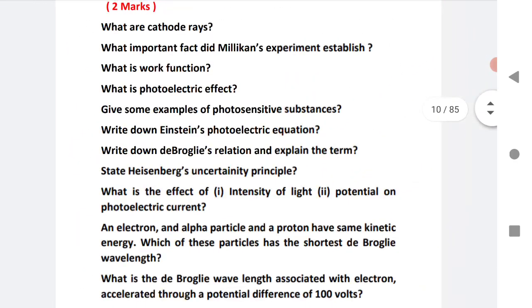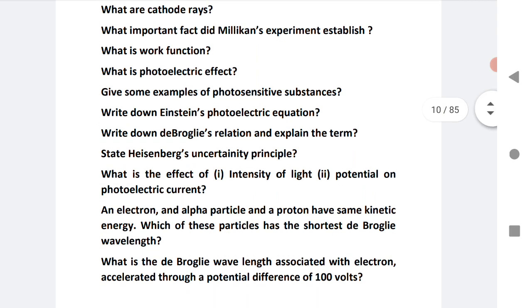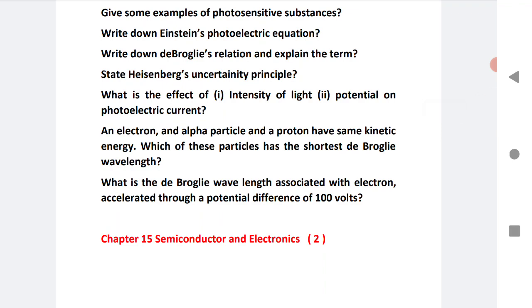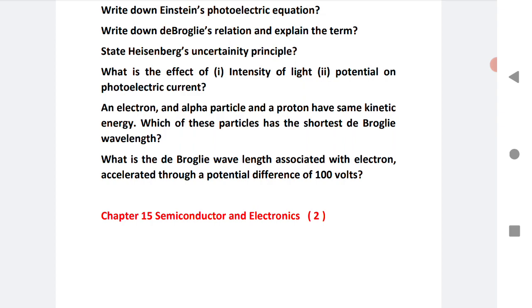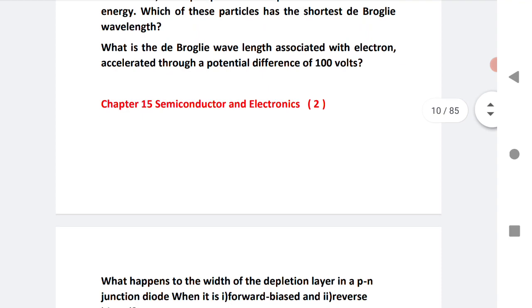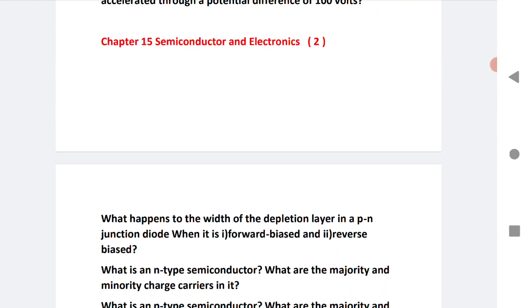First is what are cathode rays? Second is what important fact did Millikan's experiment establish? I am expecting this year this question will come. Millikan - long time ago they asked this question, but this time I'm expecting. What is photoelectric effect? Give some examples of photosensitive substances. Write down Einstein's photoelectric equation. Next is de Broglie's relation and hence Heisenberg's uncertainty principle. What is the effect of intensity of light and potential on photoelectric current? Next is a numerical problem: an electron, alpha particle and proton have same kinetic energy - which of these particles has the shortest de Broglie wavelength? Last question of this chapter: what is de Broglie wavelength associated with electron accelerated through a potential difference of hundred volts?